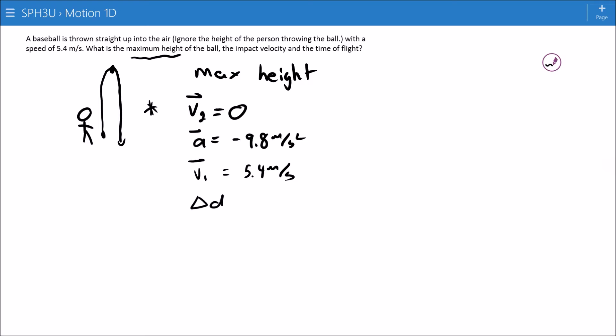So for the max height, we're asked for delta D. And the equation here is that 2A delta D equals V2 squared minus V1 squared. 2 times negative 9.8.